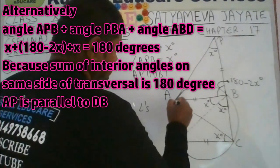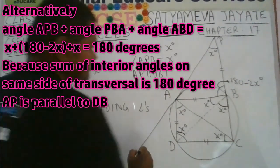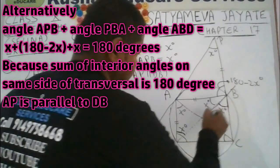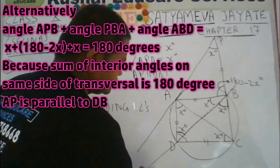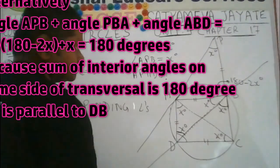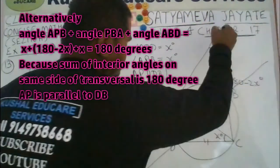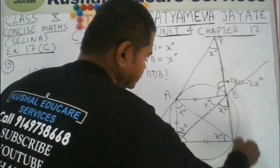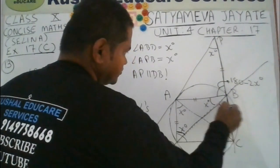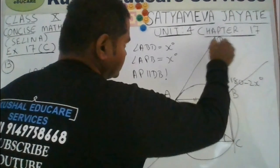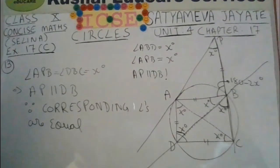To help see this more clearly, extend lines AP and DB and take line PC as a transversal. You will clearly see that angles APB and DBC are corresponding angles. If corresponding angles are equal, it shows that line AP is parallel to DB.